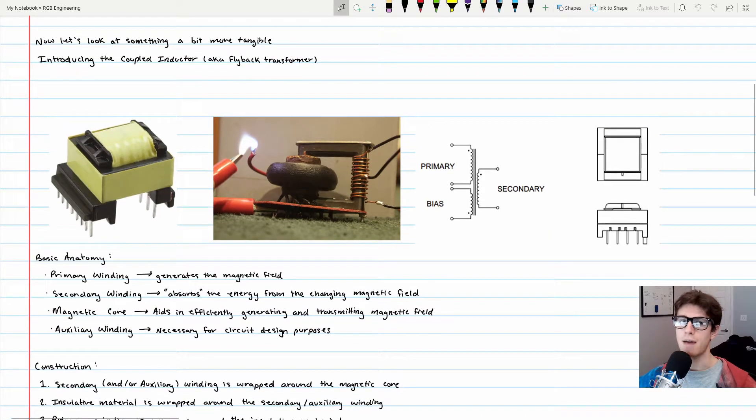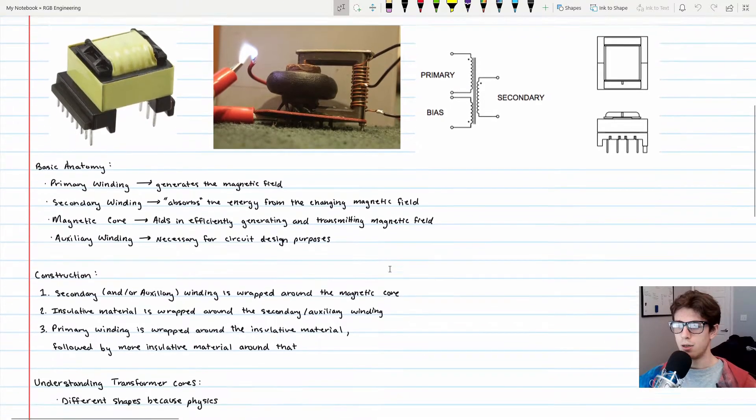There's something known as the auxiliary winding, also noted as the bias winding. For circuit design purposes, think of it as another output. You have one input which goes into the primary, and you'll get output voltages in the secondary and the bias windings. You can have multiple outputs.